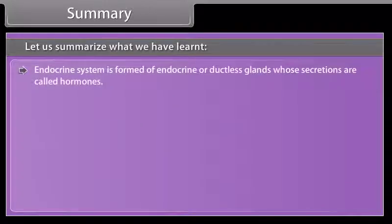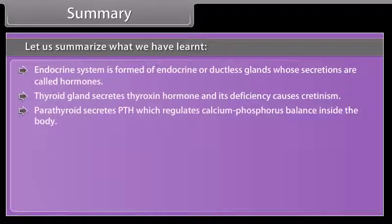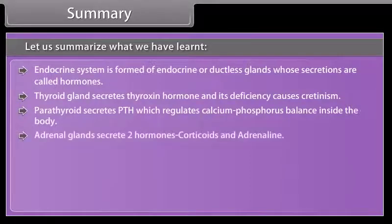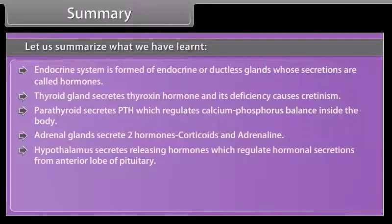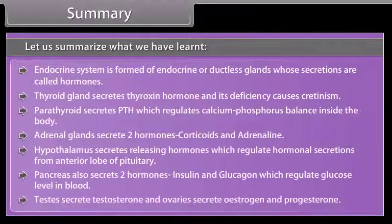The endocrine system is formed of endocrine or ductless glands whose secretions are called hormones. Thyroid gland secretes thyroxine hormone and its deficiency causes cretinism. Parathyroid secretes PTH, which regulates calcium-phosphorus balance inside the body. Adrenal glands secrete two hormones: corticoids and adrenaline. Hypothalamus secretes releasing hormones which regulate hormonal secretions from the anterior lobe of the pituitary. Pancreas also secretes two hormones — insulin and glucagon — which regulate glucose levels in blood. Testes secrete testosterone and ovaries secrete estrogen and progesterone.